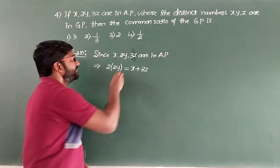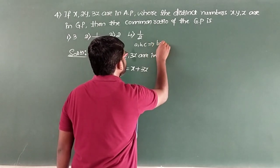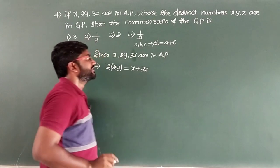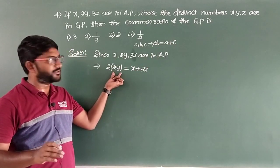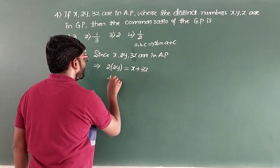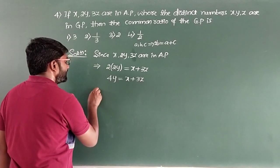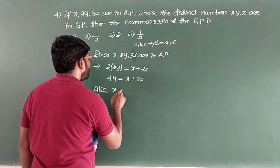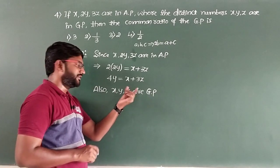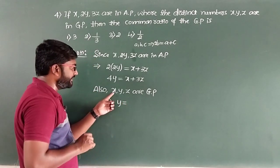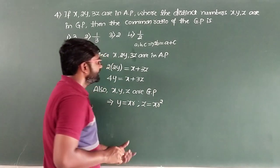The condition for AP: if A, B, C are in AP then 2B = A + C. Applying this: 2×(2y) = x + 3z → 4y = x + 3z. Also x, y, z are in GP, so we write y = xr and z = xr². Substituting: 4(xr) = x + 3(xr²).